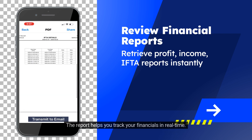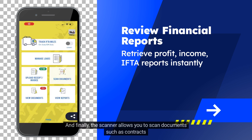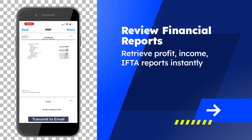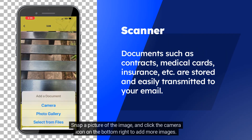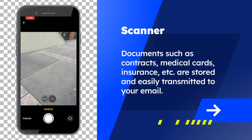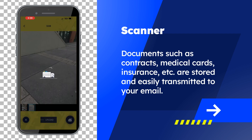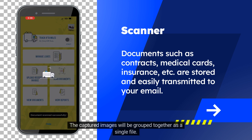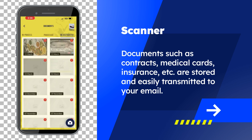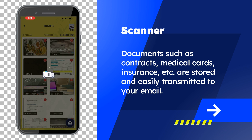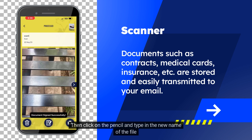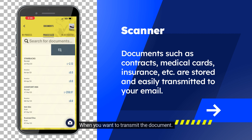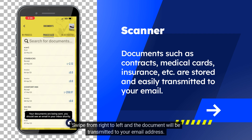The scanner allows you to scan documents such as contracts, medical cards, or insurance cards. First, click on Scan Documents. Snap a picture of the image and click the camera icon on the bottom right to add more images. Once you're done capturing the images, click Upload. The captured images will be grouped together as a single file. You can rename the document by selecting it from the file cabinet, then click on the pencil and type in the new name of the file. When you want to transmit the document, swipe from right to left and the document will be transmitted to your email address.